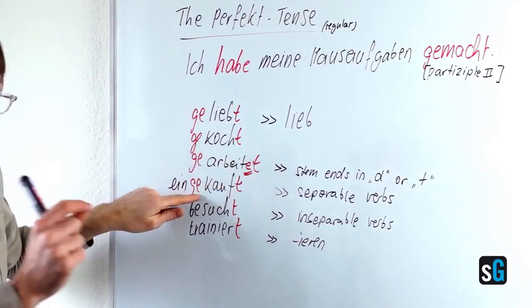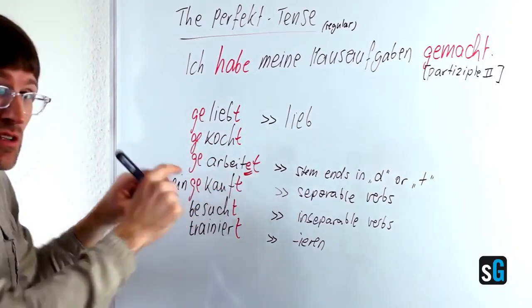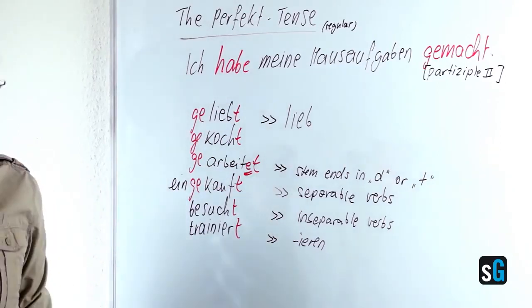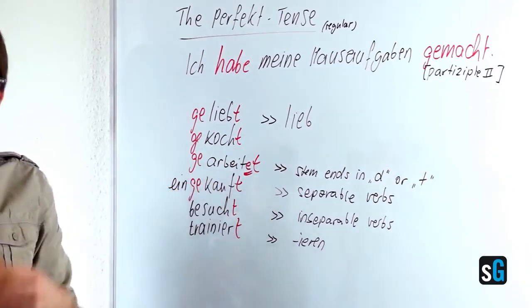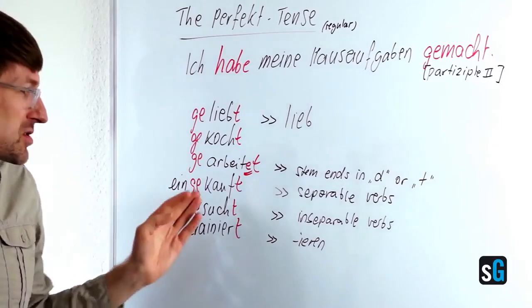with the exception that the ge is in between the separable part and the stem of the verb. You can see that easily here. So, if you know the separable verbs, this shouldn't be a problem.